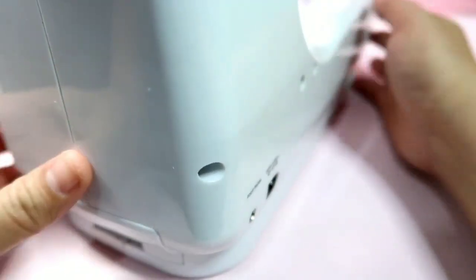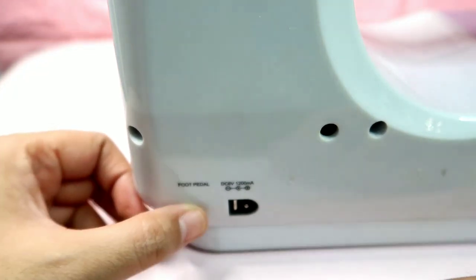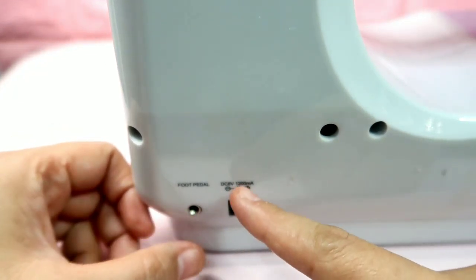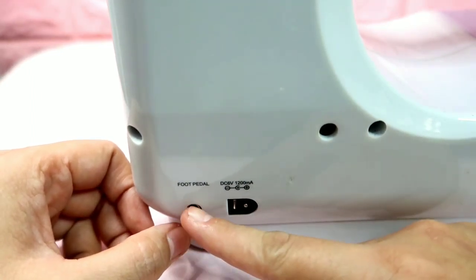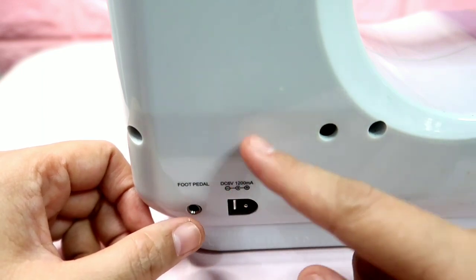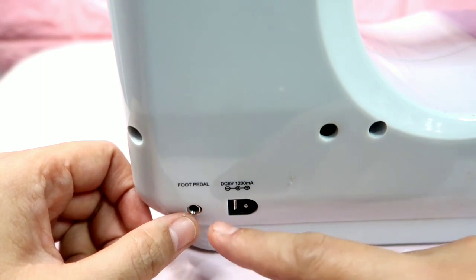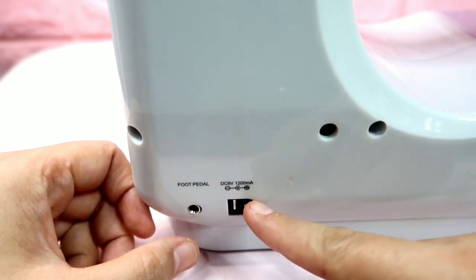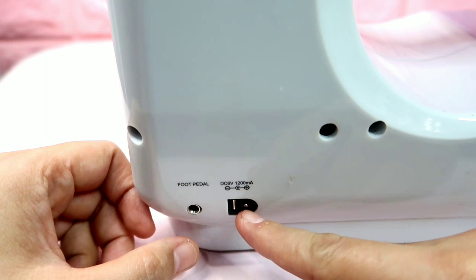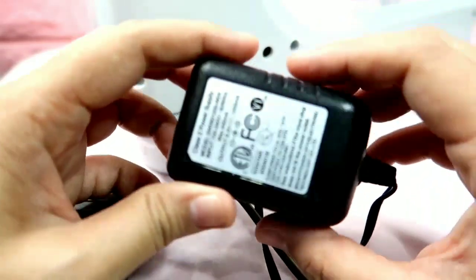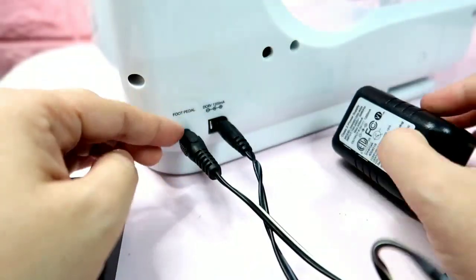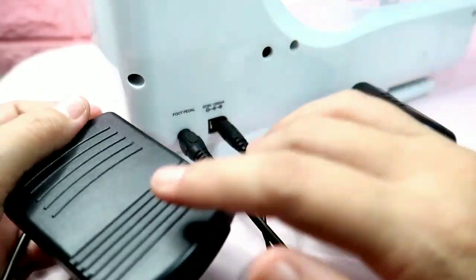Now let's look at the back. At the back there are two plug types: one for the foot pedal and one for the power supply. This is where you plug in the electricity, and this is for the foot pedal. When I bought the machine, it came with a foot pedal and AC DC adapter.